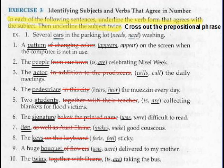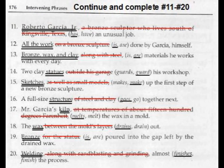Now that you've done number 1 through 20, please check your answers. The first screen shows answers for number 1 through 10 — you can pause the video and check yours, making sure you chose the correct verbs to go with the subjects. Make sure you've double-underlined the subjects, single-underlined the predicate, and crossed out the intervening phrases. Then check numbers 11 through 20 on the following page. Pause the video as needed to check all your answers carefully.